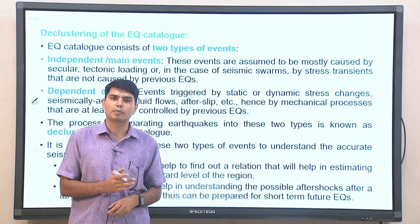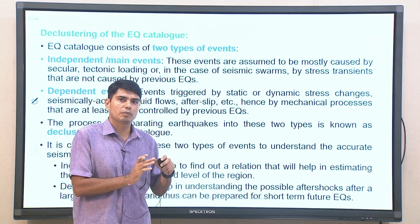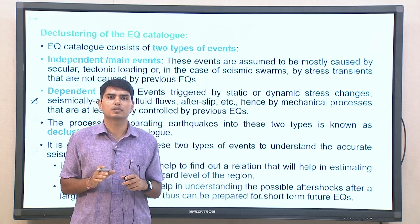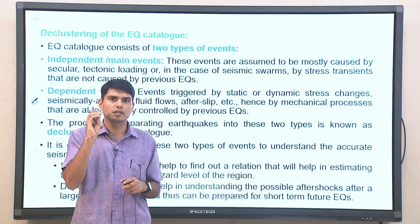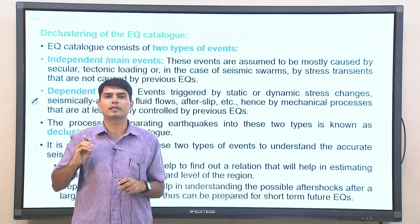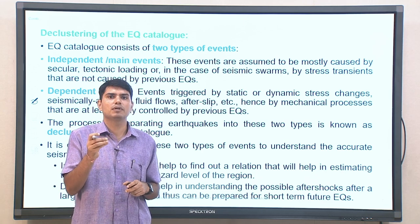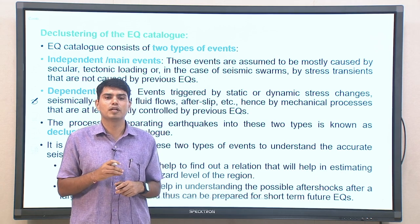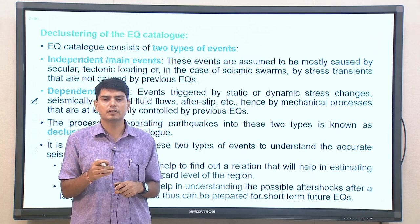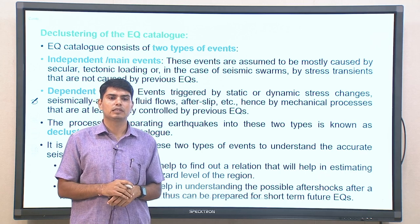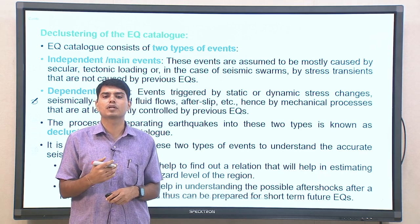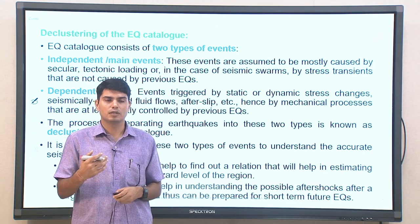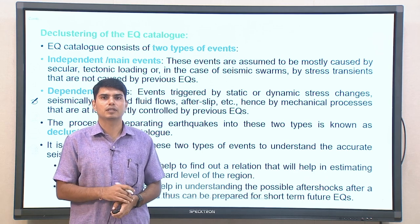Independent events or main events are those assumed to be caused by tectonic loading. Dependent events are those related to static or dynamic stress change, after-slip reaction of the fault plane, or other mechanical processes which release pending energy before the subsequent build-up of strain energy for the next earthquake event. The process of separating dependent events from independent events is called declustering. Once you have removed dependent events, whatever is available in the earthquake catalog consists of events each independent in itself, and their repetition rate gives understanding about the seismic activity of a particular region.